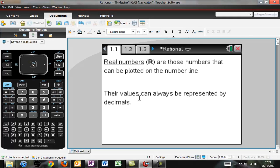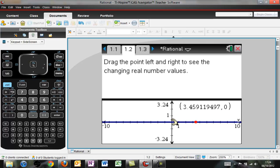So we're going to go ahead and go control right and move to this next page. You'll see that this page says drag the point left and right to see the changing real number values. Well, I can click on this point.